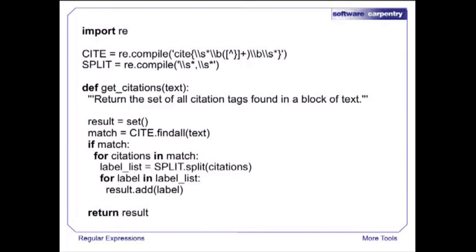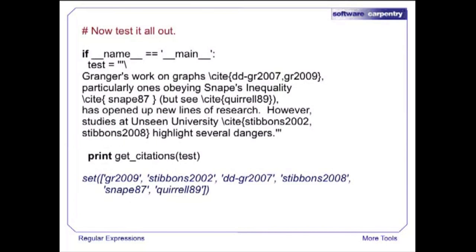We can use one more trick to make this function more efficient. Instead of turning the regular expression into a finite state machine over and over again, we can compile the regular expression and save the resulting object. That object has methods with the same names as the library functions — like search and findall. If we're using the same pattern over and over again, compiling it once and reusing the compiled object is much faster. The changes required are very small: instead of saving textual representations, we compile them and call the methods of those saved objects. The result is a set of all citations in our test data pulled out with just a dozen lines of code.